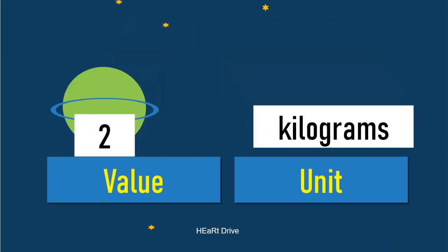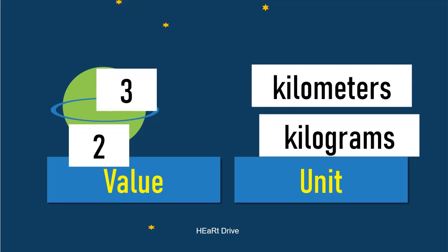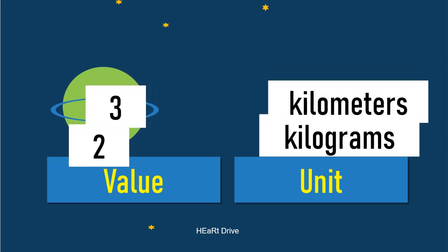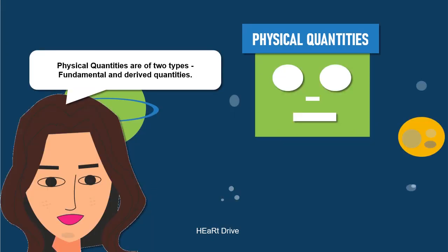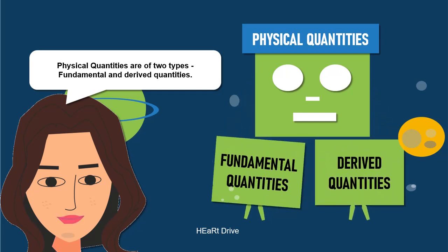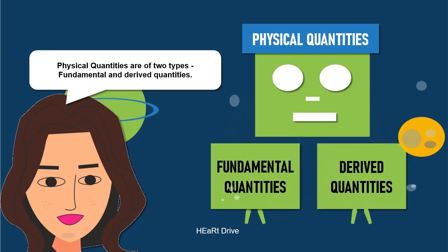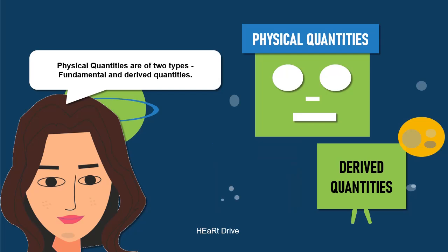These quantities are expressed as a value with a unit. Every measurement is expressed only in this pattern: value with unit. When we talk about physical quantities, they are of two types in general — fundamental quantities and derived quantities.